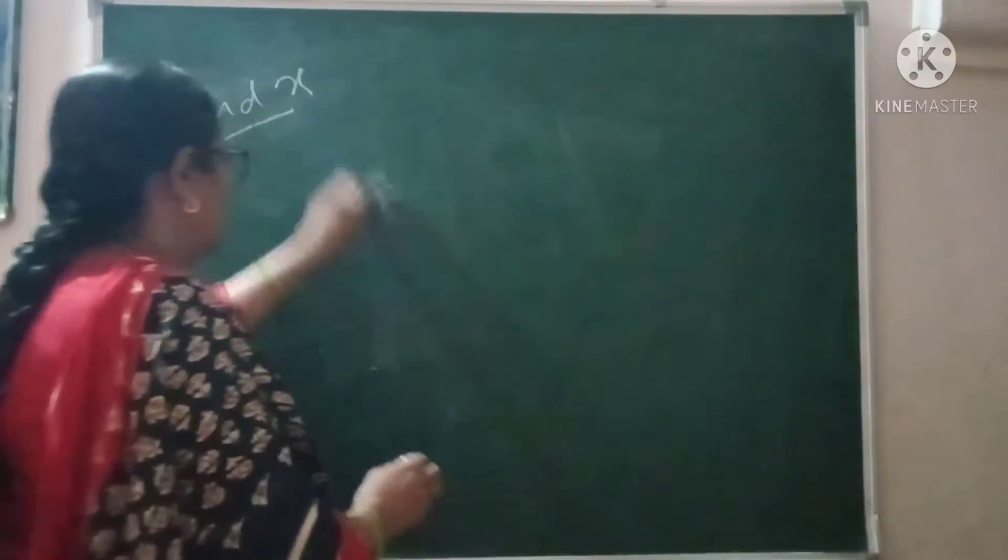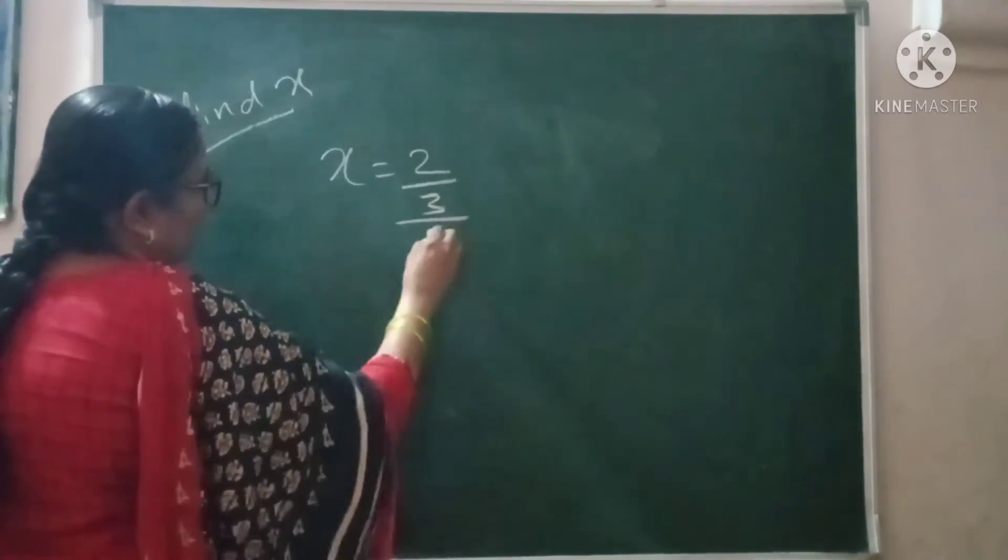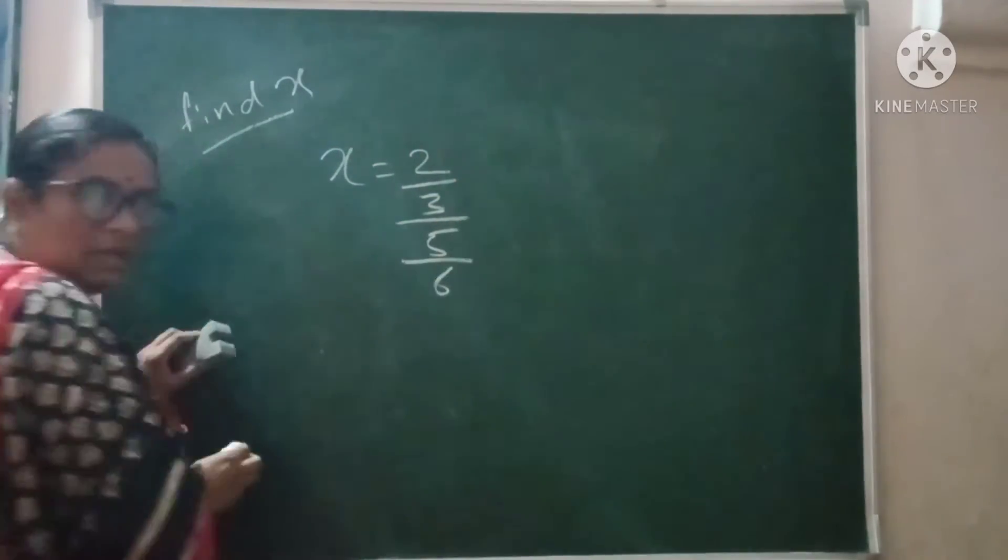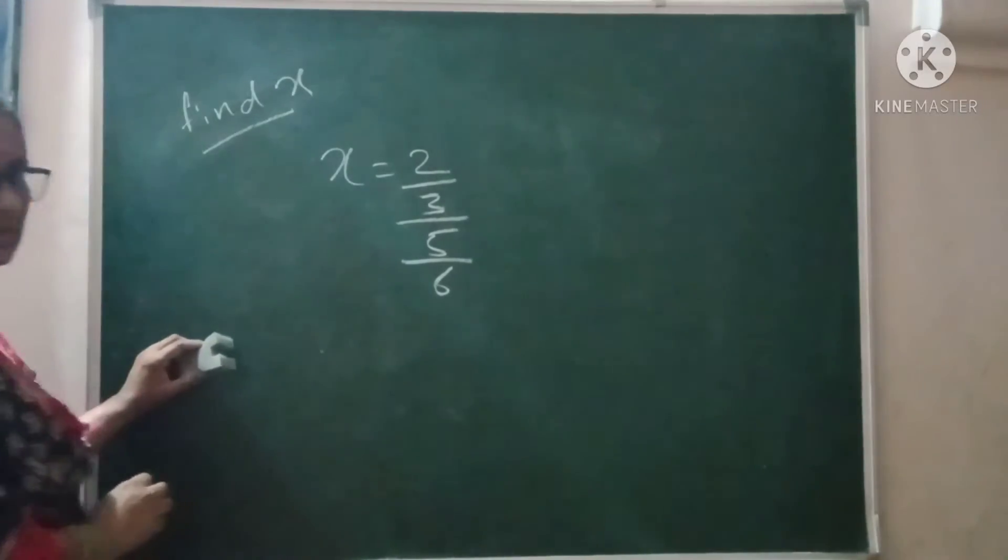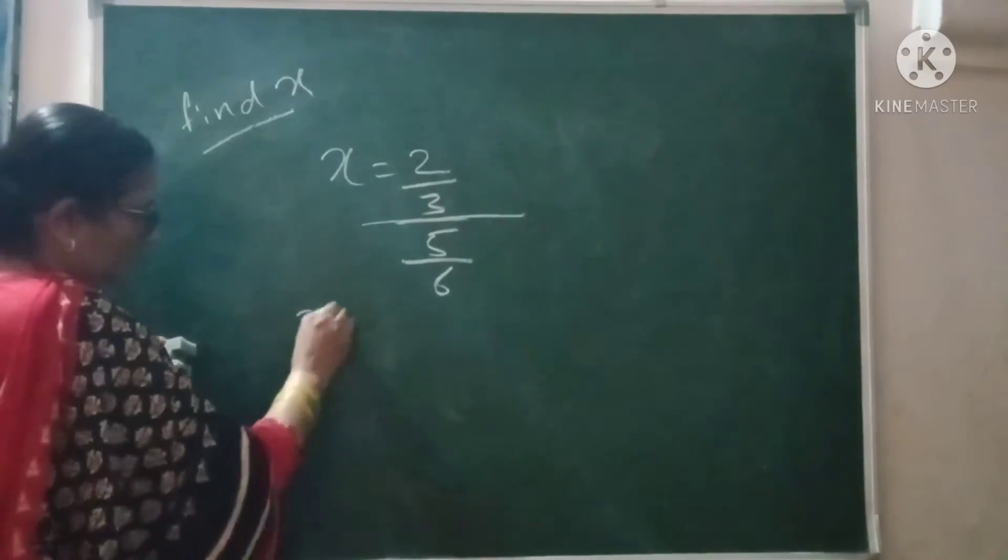Then sometimes you may get like this also. x is equal to 2 upon 3 divided by 5 upon 6. Most of the students get confused with this one. 2 upon 3, this is whole divided by 5 by 6. How to solve this one?